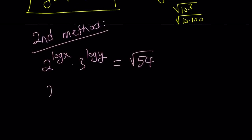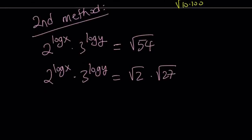Awesome. Let's go ahead and do it. So we can now replace square root of 54 with square root of 2 times square root of 27. And as you know, and we've just done this, square root of 2 can be written as 2 to the power of 1 half, and this can be written as square root of 3 to the third, so we can write it as 3 to the power 3 halves.